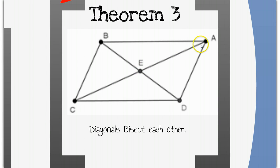So CE is congruent to EA, and BE is congruent to ED. If you wanted to prove this, you would do that by using our theorems about parallelograms, knowing, for instance, that CD is congruent to AB.